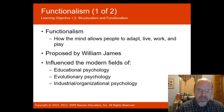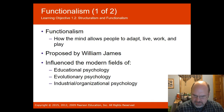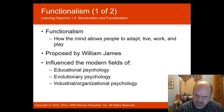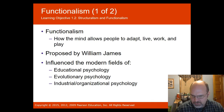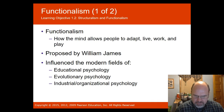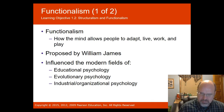Functionalism focused on how the mind allows people to adapt, live, work, and play — how do people function in the real world? For instance, avoiding eye contact in an elevator might be related to the primitive need to avoid what might be seen as a challenge. Functionalism was proposed by William James and was taught at Harvard University in the 1870s. It influenced modern fields of educational psychology, evolutionary psychology, and industrial psychology. James wrote the book Principles of Psychology and introduced the concept of functionalism.